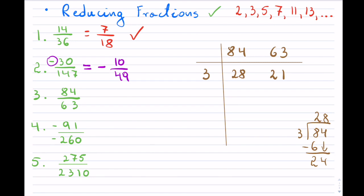I check again: will 3 work once more? 3 works for 21 but it will no longer work for 28, so we are done with 3. The next prime is 5 — 5 clearly doesn't go into 21. The next one is 7: 7 goes into 21, and it also goes into 28 — 7 goes into 28 four times and into 21 three times. My smaller result of 3 is already prime and does not go into 4, so I stop.